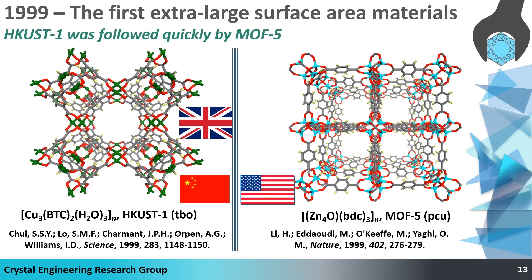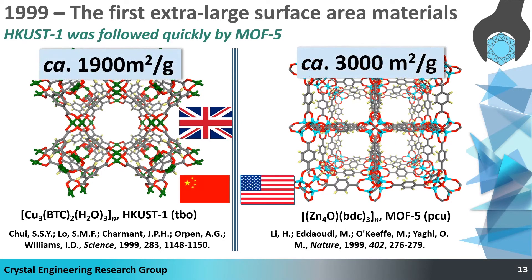Crystal engineering evolved steadily during the 1990s, but I doubt I'd be here if it weren't for two very important papers published in 1999: HKUST-1 on the left and MOF-5 on the right. Why were these structures so important? They set new benchmarks for properties — specifically, gravimetric surface areas of 1,900 m² per gram and 3,000 m² per gram respectively. This fulfilled the dream Feynman had in 1959 of doing different things with materials.